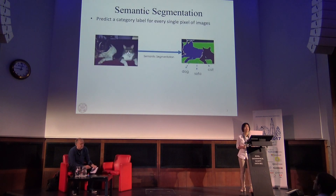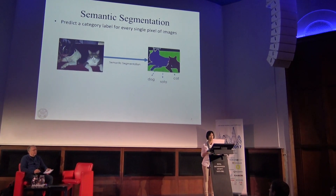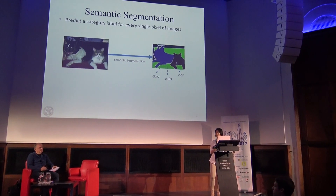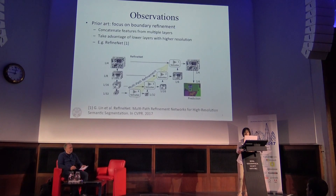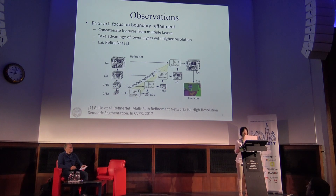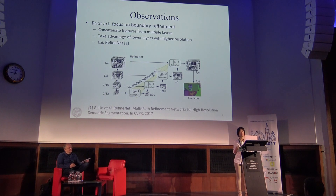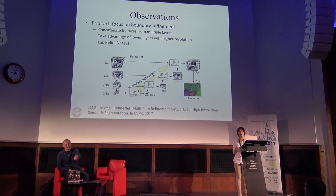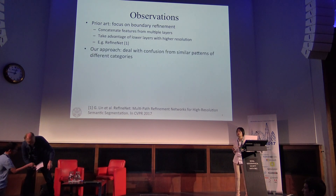This topic was already introduced by the previous presenter. Here we focus on image semantic segmentation as well, but we do fully supervised segmentation, which is different from the previous presenter — we do have annotations for every single pixel of these images. Semantic segmentation is quite a popular topic, and there are a lot of recently published papers getting good results. There's a trend that methods tend to combine features from different convolutional layers, especially leveraging lower layers because those layers have higher resolution, which helps get better object boundaries.